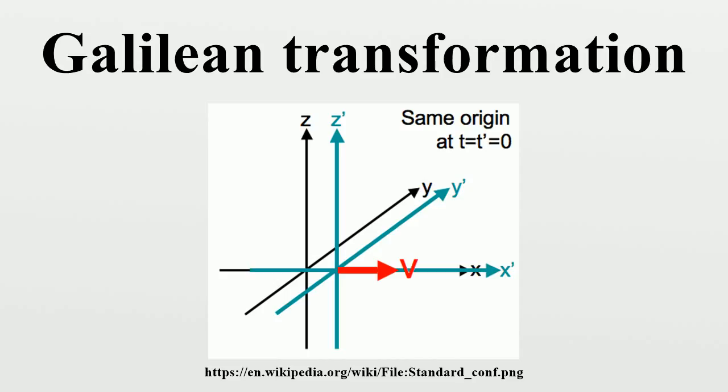This Lie algebra is seen to be a special classical limit of the algebra of the Poincaré group, in the limit c to infinity. Technically, the Galilean group is a celebrated group contraction of the Poincaré group.